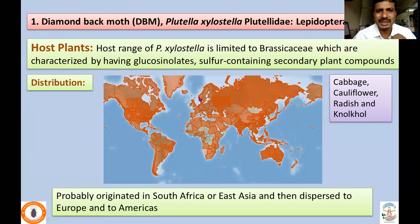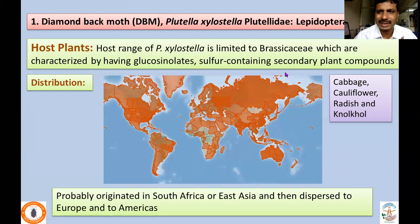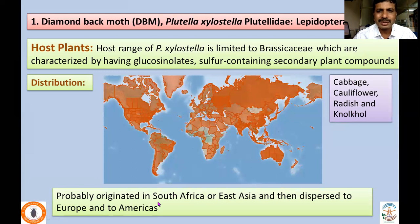One of the very important reasons that it attacks all the cruciferous crops is the presence of glucosinolates, which are sulfur-containing secondary plant compounds that attract the Diamond Backmoth. Many other pests which depend on these crops also get attracted to glucosinolates produced by the host plants. This species in fact originated in South Africa or East Asia and is distributed throughout the world at present.